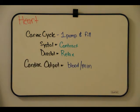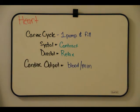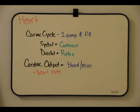Cardiac output is the volume of blood per minute that the left ventricle pumps into the systemic circuit. This depends on the rate of contraction, or heart rate, and the amount of blood pumped by the left ventricle in each contraction, called stroke volume.